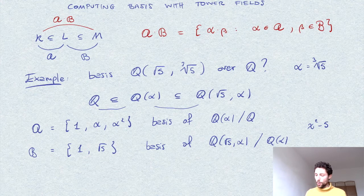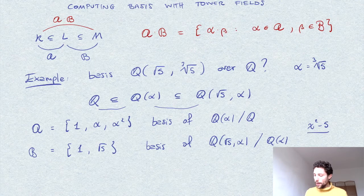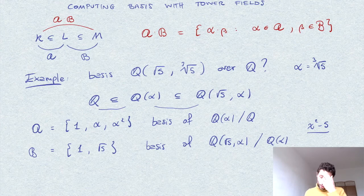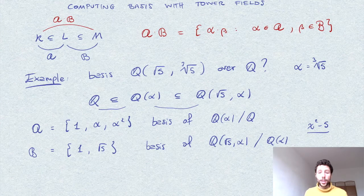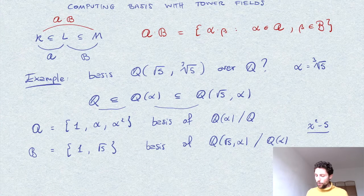So this polynomial stays irreducible over Q of alpha, and therefore it's the minimal polynomial of square root of 5 in this extension.